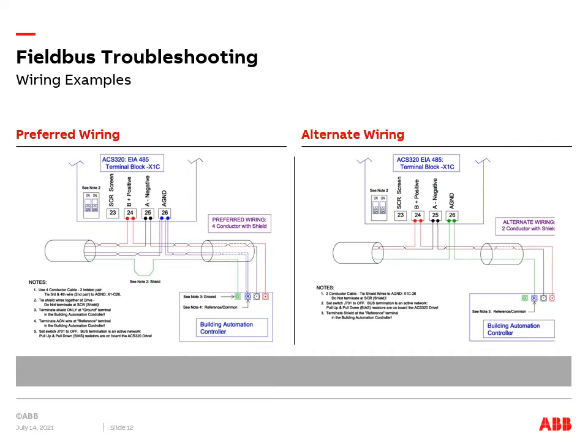This information is taken from the user's manual ACS-320 drives 0.5 to 30 horsepower document, which is available as a free download on new.abb.com.